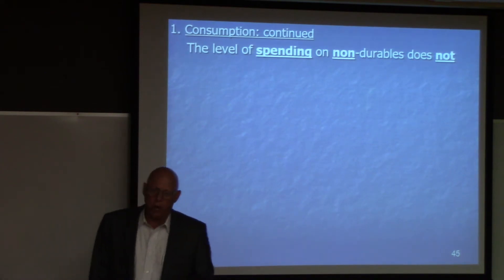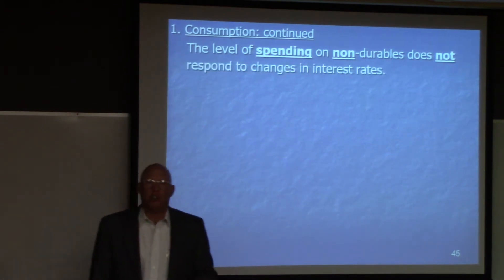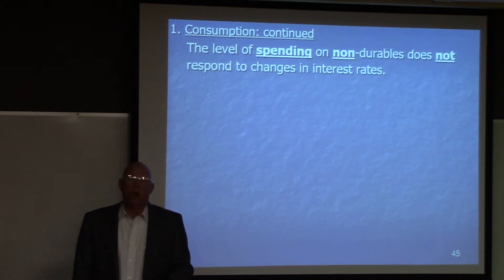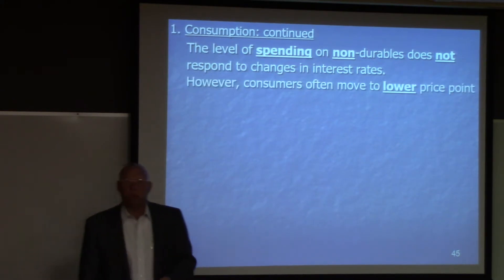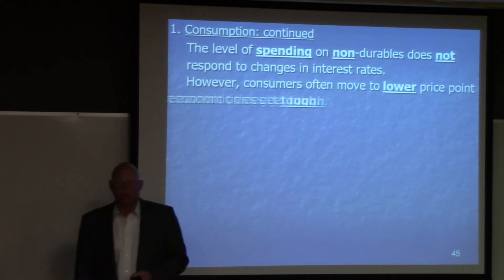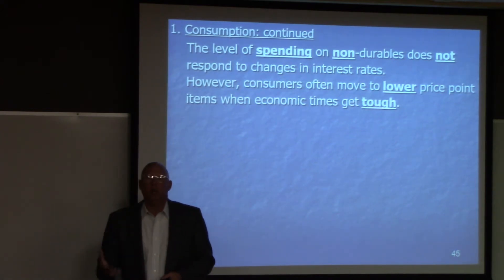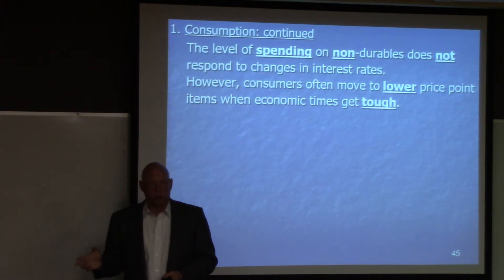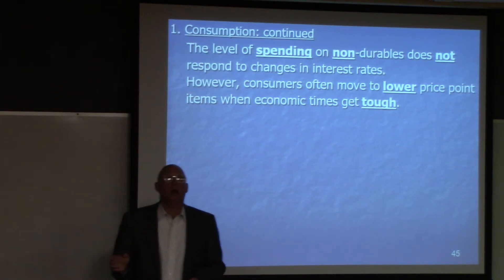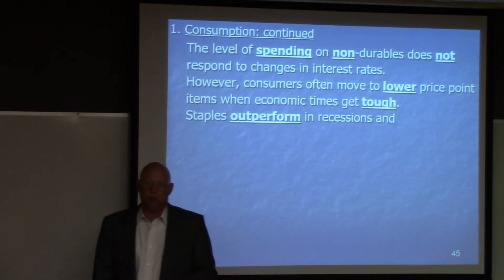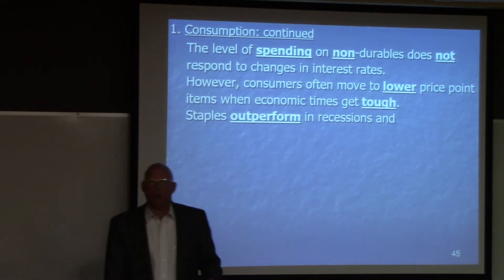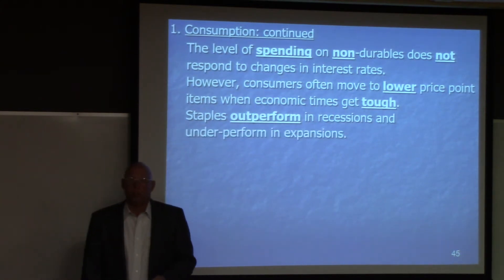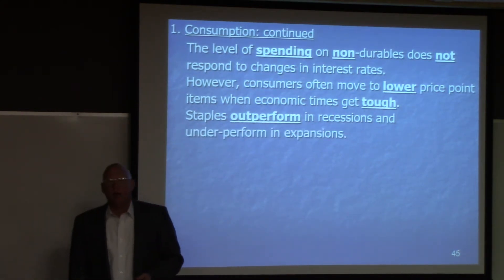The level of spending on non-durables does not respond to changes in interest rates — interest rates do not affect what you spend on food and healthcare. However, consumers often move to lower price points when economic times are tough. When times are good, you want to own the Nordstroms; when times are bad, you want to own the Dollar Generals, Family Dollars, and Walmarts. Staples, which are non-durable items, outperform in recessions and underperform in expansions.